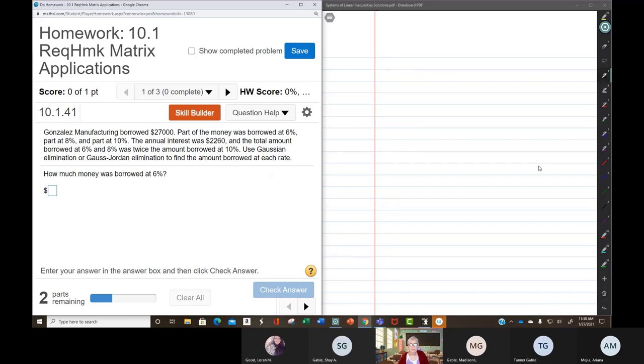So now, I can do this. I can let X equal the amount of money borrowed at 6%. And Y be the amount of money borrowed at 8%, and Z be the amount of money borrowed at 10%.